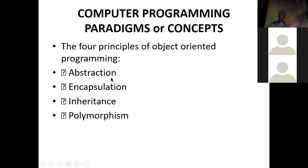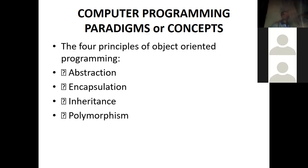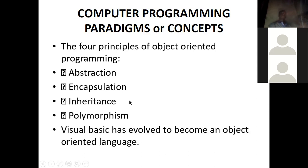In object-oriented programming, we can have abstraction, encapsulation, inheritance, and polymorphism. Abstraction is about hiding data — like what you put in your code with the percentage sign, a lot was hidden but we showed only what was needed. Encapsulation works together with abstraction — like a capsule. Inheritance means objects can have parent-child relationships, and the child inherits all the properties of the parent.